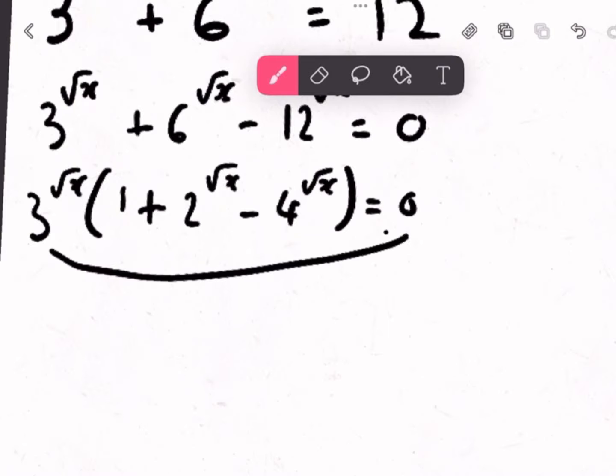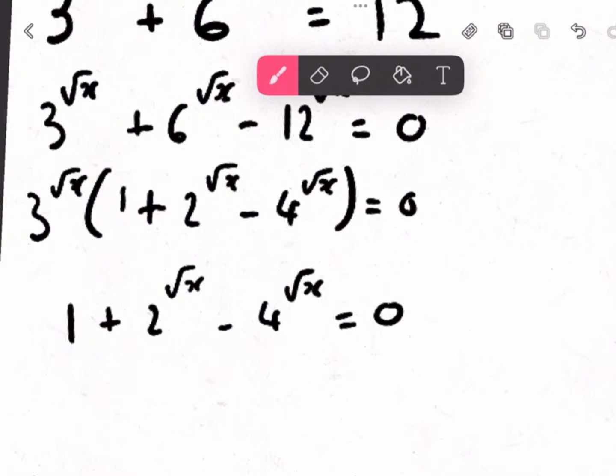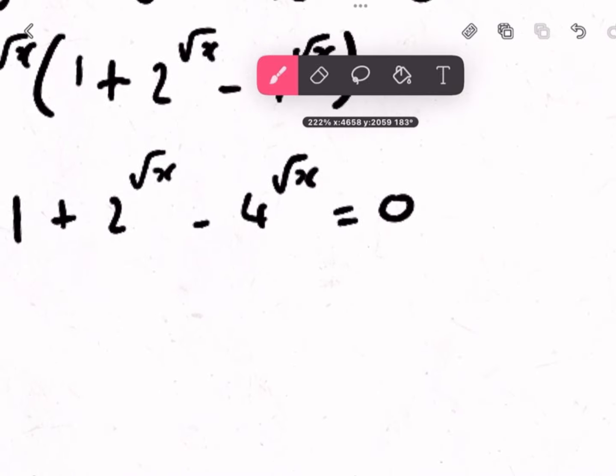Alright, now, let me take the 3 to the power of root x to the other side. And we can just write 1 plus whatever that is is equal to 0. Because if it goes to the other end and it times by 0, it'll just be 0.